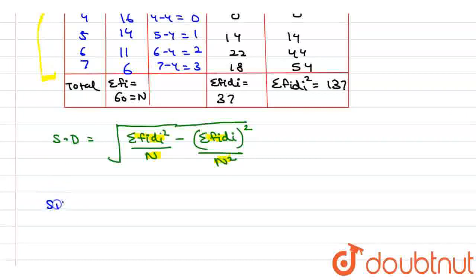So now we have to put the value. Standard deviation equals under root: summation of f_i*d_i square is 137 divided by n, which is 60. And here summation of f_i*d_i, which is 37 whole square, divided by 60 square.